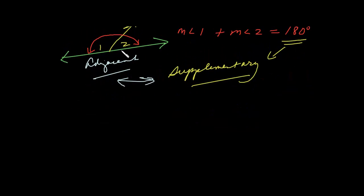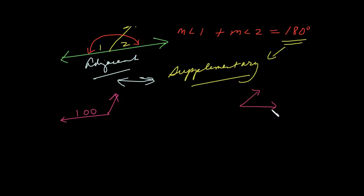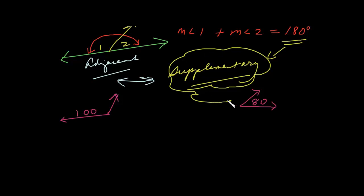So they can be next to each other — a linear pair — or they may not. That is to say, if we were given two angles and one angle measures 100 degrees, and we have a second angle somewhere else that measures 80 degrees, the fact that the sum of these measures — 100 plus 80 is 180 — that in and of itself would make them supplementary. These two angles are still supplementary because the total is 180 degrees for the sum of their measure.